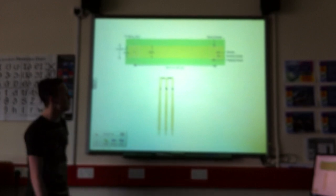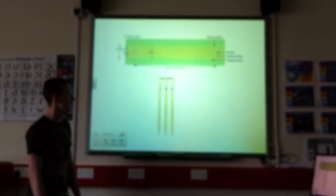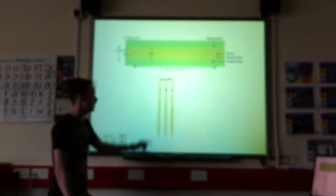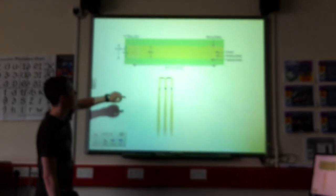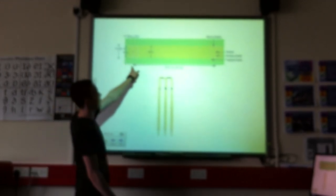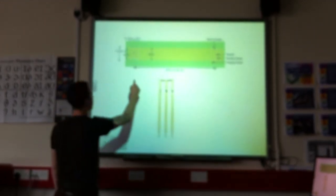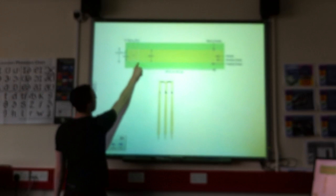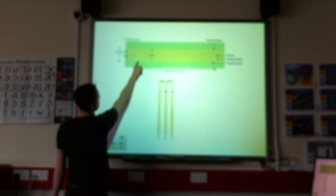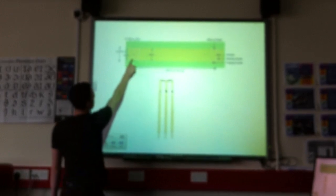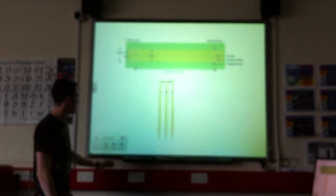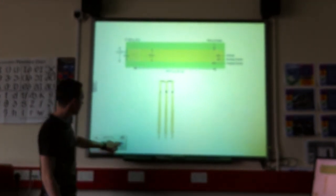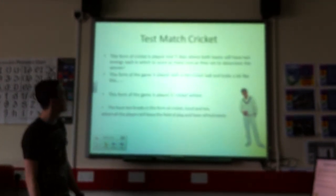That is a photo of a pitch and the wickets — there are your bails and your wickets. This is obviously the length of your pitch. There is the batsman's crease where the batsmen will stand, and this is the bowler's crease where the bowler must deliver the ball from behind that line and not step over it.